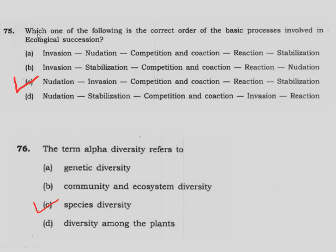Question 75: Which one of the following is the correct order of basic processes involved in ecological succession? In ecological succession, the order is: first nudation, then invasion, then competition and coaction, then reaction, then stabilization. Option C.